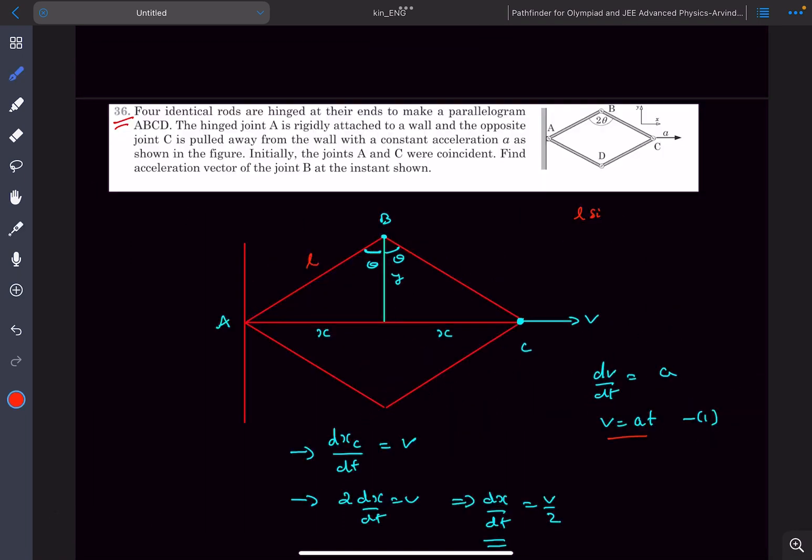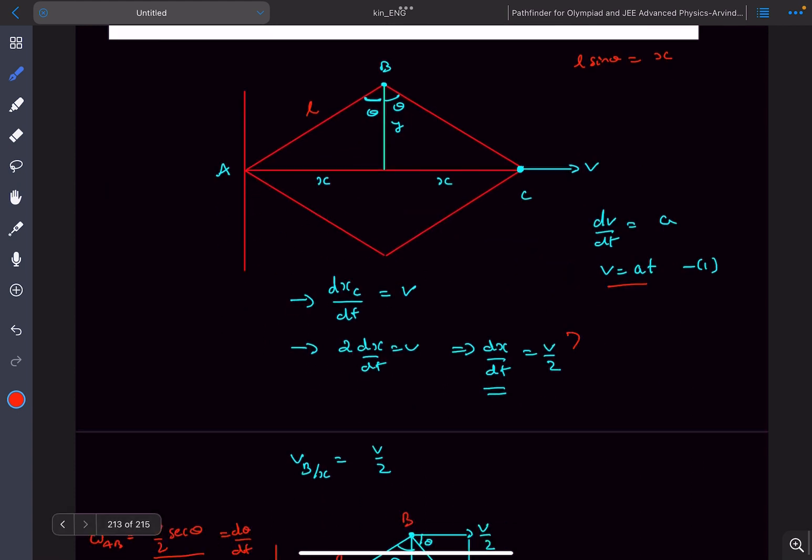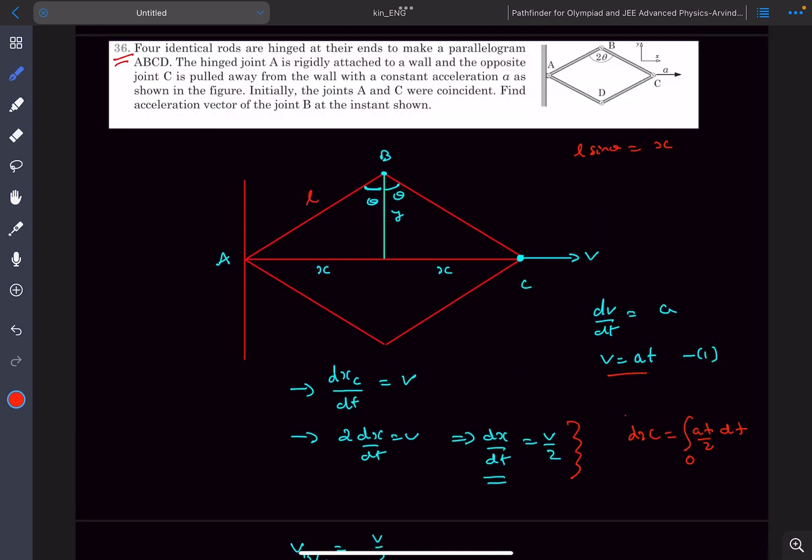From this triangle L sin theta is equal to x. dx by dt we found it out to be V by 2. So from here we can get x dx equals, now velocity we determine it to be AT, so this will be AT by 2 dt. Now if we integrate it, at t equal to 0 the value of x would be 0 and why is it because it's given that initially A and C were coincident.